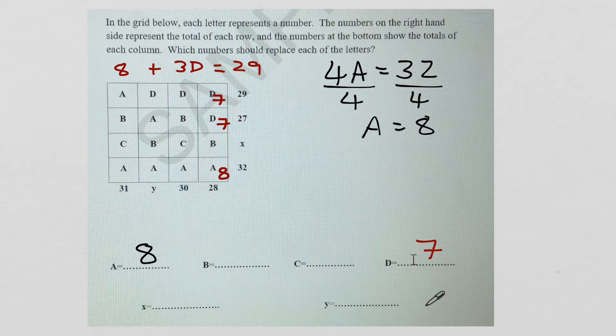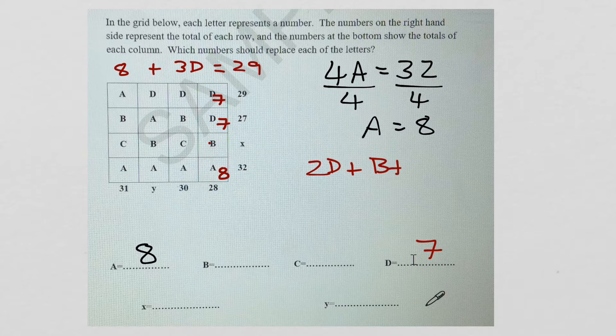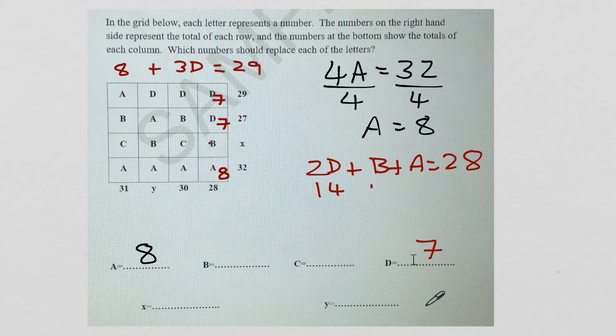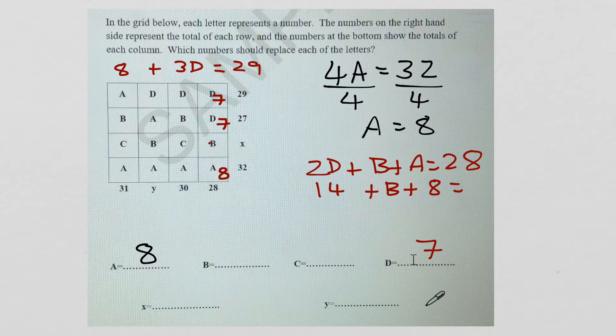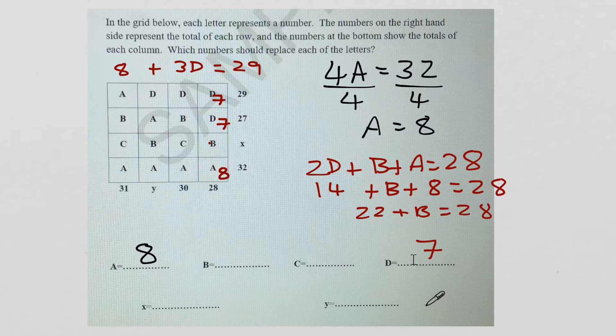And once you know that d equals 7, you can use that to find out what b is. It's 2d plus b plus a equals 28. I know that 2d equals 14 plus b plus 8 equals 28. Simplify. So we have 22 plus b equals 28. So then you know that the missing b has to equal 6.